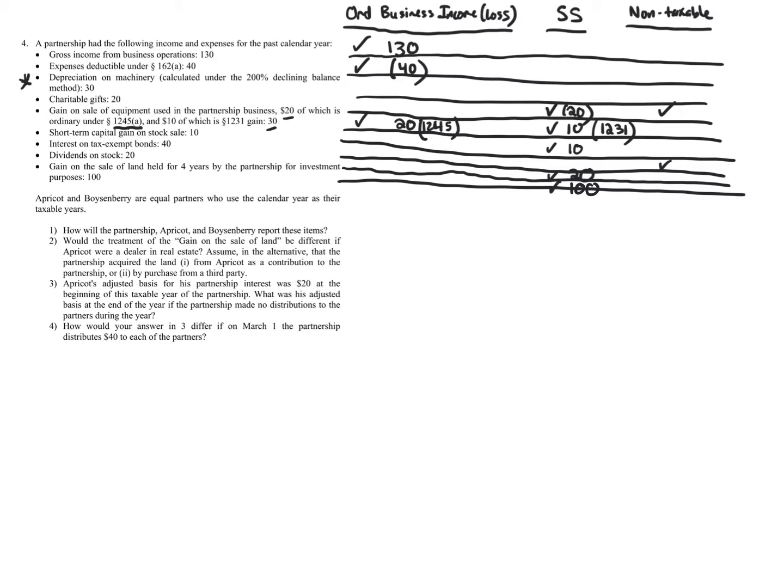Now let's go back to depreciation. Now that we've seen the main examples of separately stated items versus ordinary business income loss, we see these distinctions on Schedule K and K-1. In practice, we have to ask: is there any reason why a partner would need to know the specific amount? It can't just be lumped together.